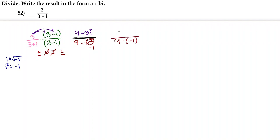And the numerator I'm just going to bring across here. So, here we have a double negative, so this really reads 9 plus 1. So, 9 plus 1 is 10. And there we go — there is our simplified version. So, here this reads 9 minus 3i over 10.